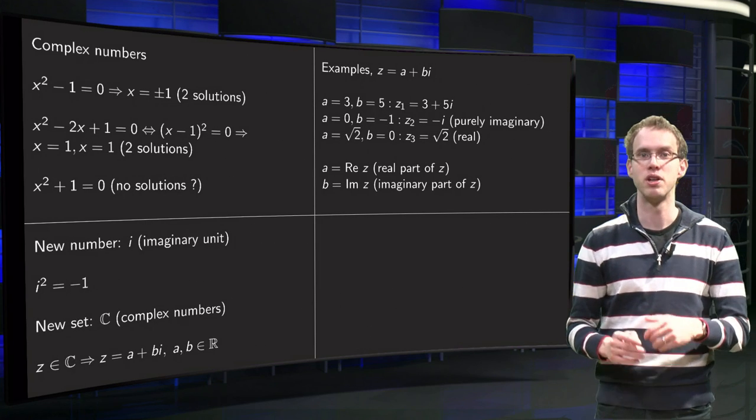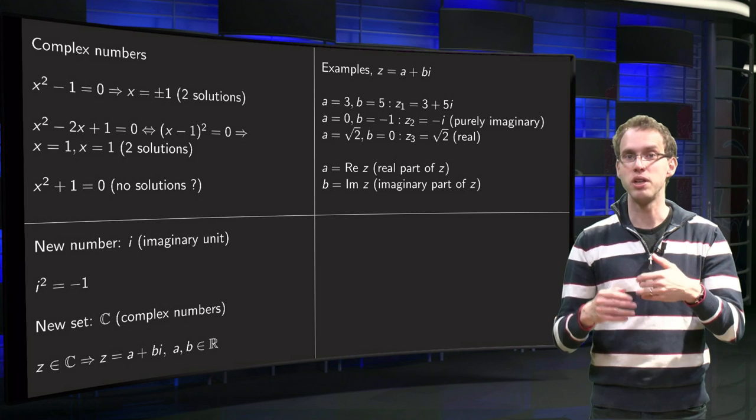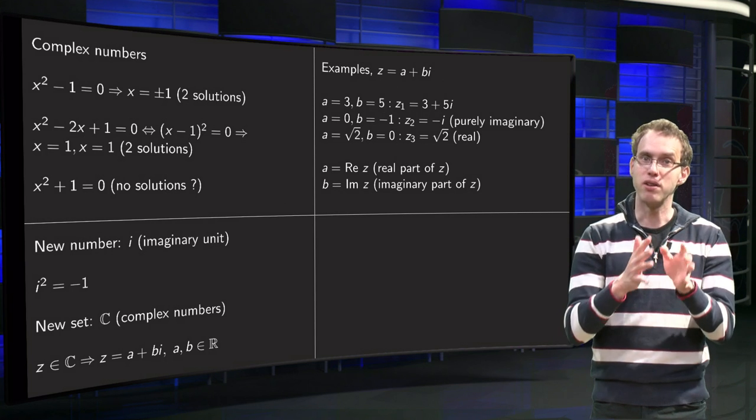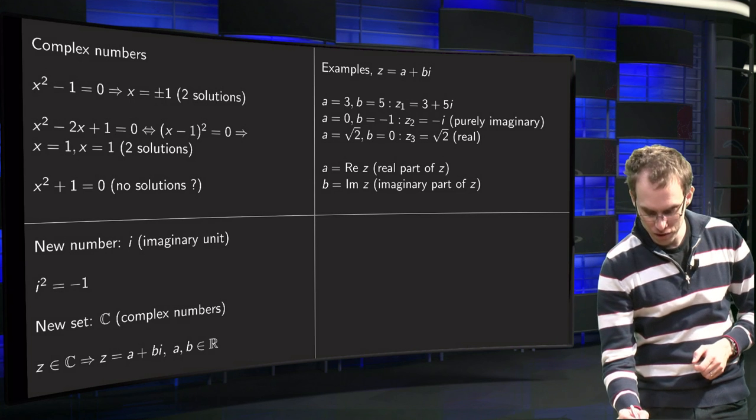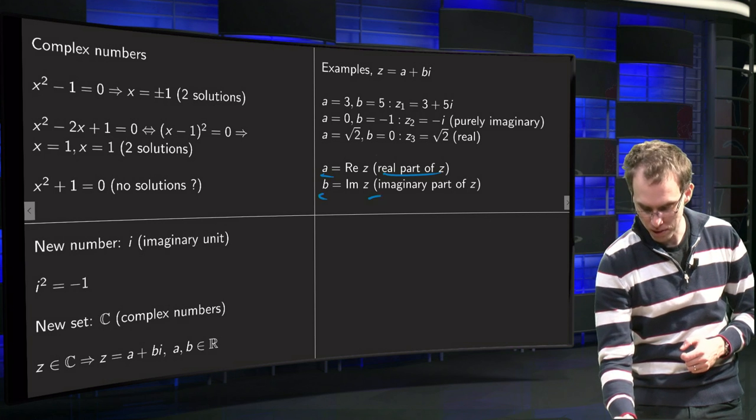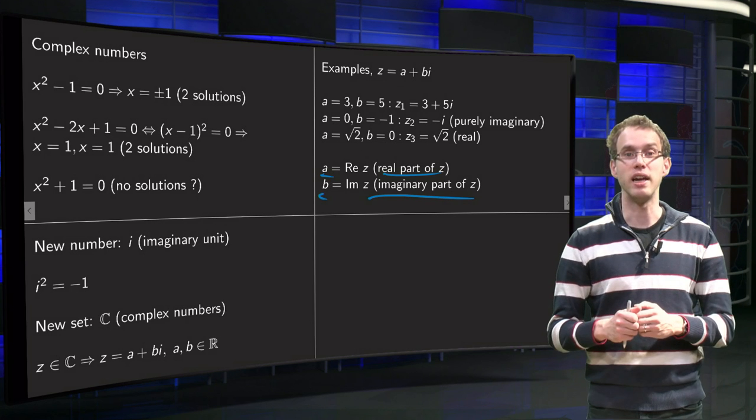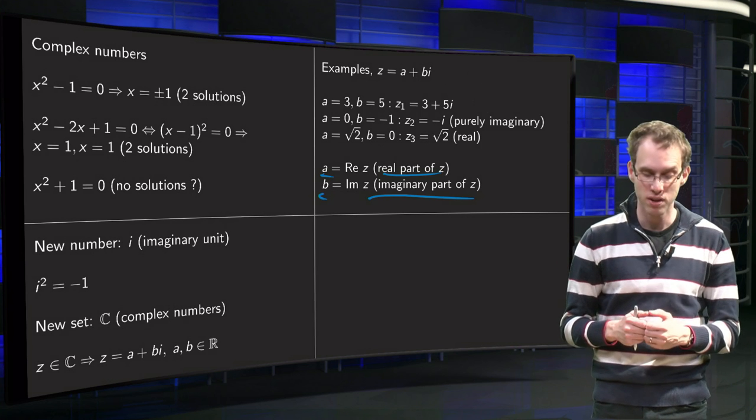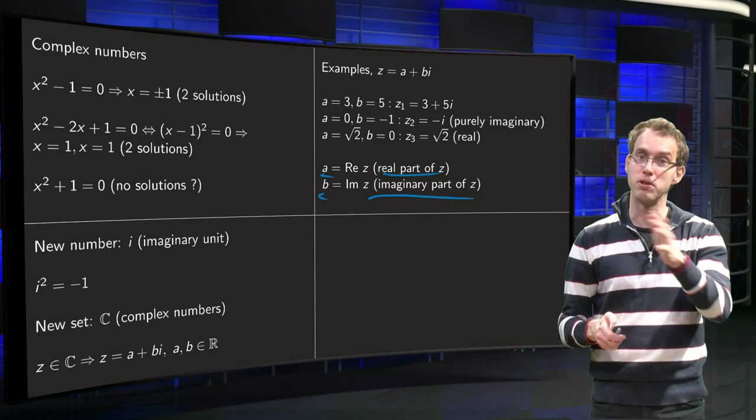Let's look at a few examples. We can choose a and b in any way we like. We will call this a, the first part, we will call that the real part of z, and b we will call that the imaginary part of z, and we can choose any a and b we like. For example, if we choose a equals 3 and b equals 5, we get the complex number 3 plus 5 times i.